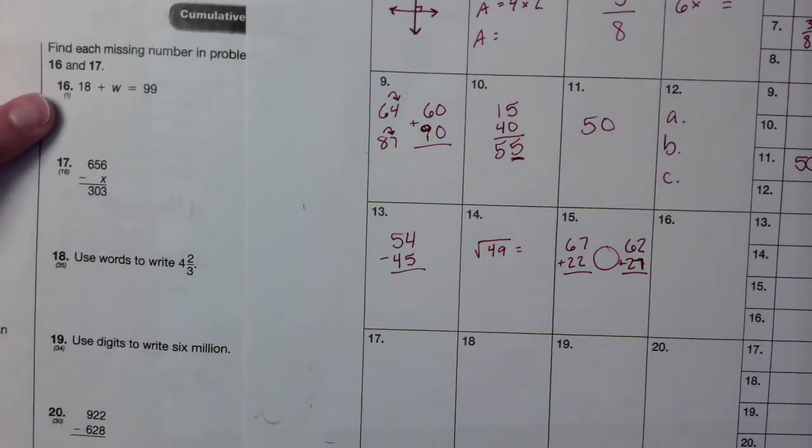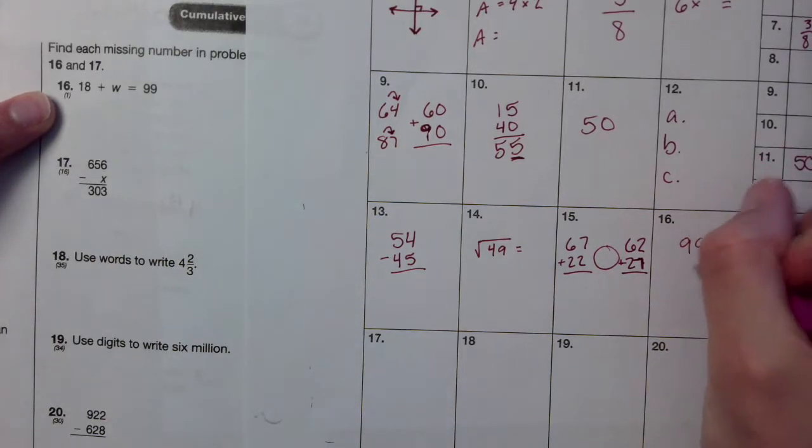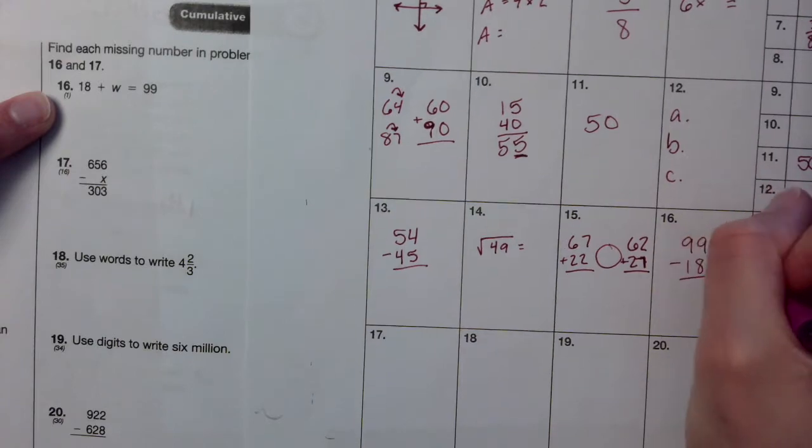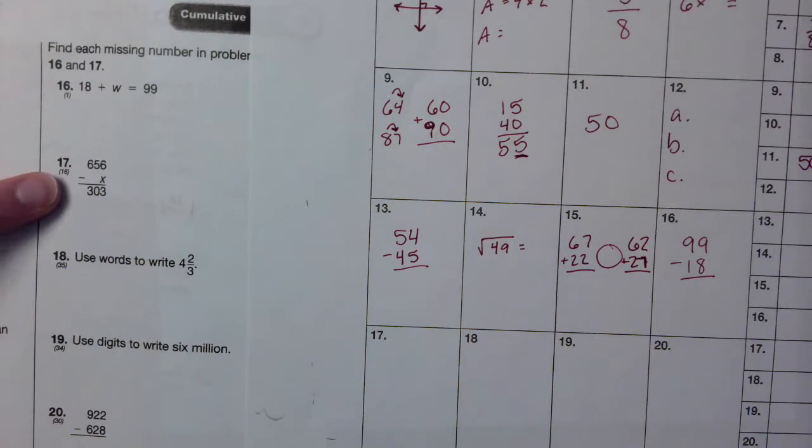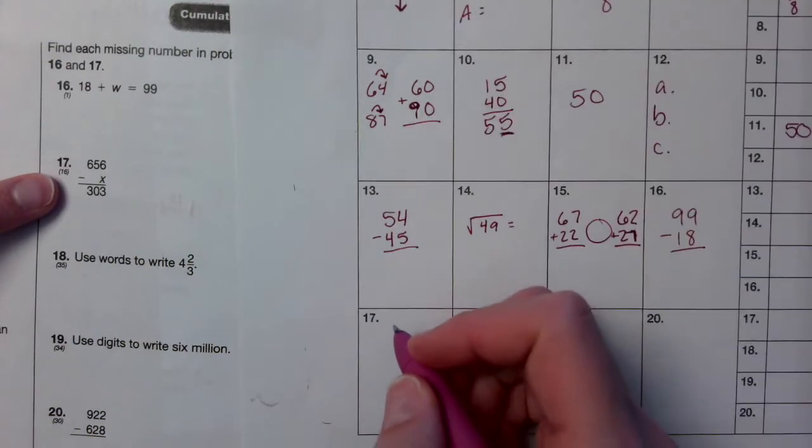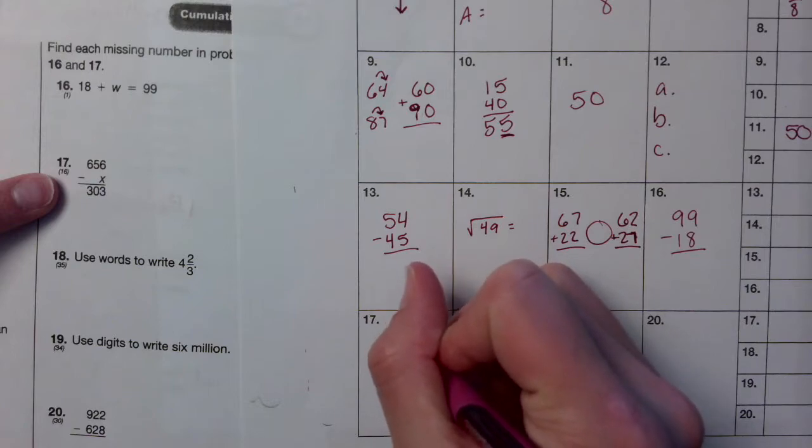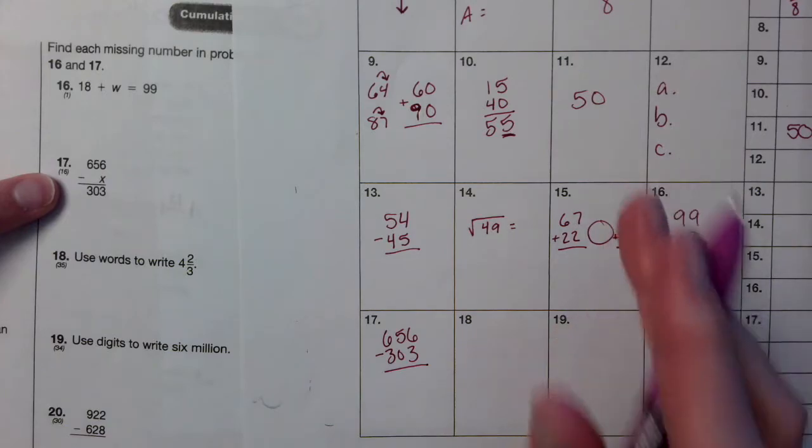16, we've got a missing number in an addition sentence. To find the answer, subtract. So do 99 minus 18. 17, we've got a missing number in a subtraction sentence. The missing number is second. So you still subtract. So do 656 minus 303.